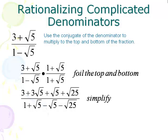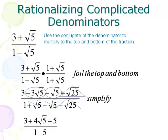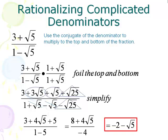We can now simplify. On the top, 3 square roots of 5 and 1 more square root of 5 make 4 square roots of 5. Square root of 25 is regular 5, and 5 plus 3 equals 8. On the bottom, the positive and negative square roots of 5 cancel out, and negative square root of 25 becomes negative 5, so 1 minus 5 is negative 4. So the top is 8 plus 4 square roots of 5 over negative 4. Negative 4 divides into both parts: 8 divided by negative 4 is negative 2, and 4 divided by negative 4 gives negative 1 square root of 5. Final answer: negative 2 minus square root of 5.